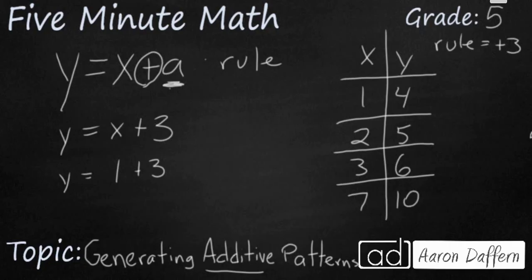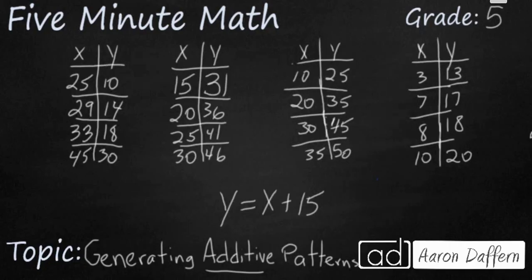Let's look at another example. Sometimes you'll get a problem like this. You are presented with four separate tables and you need to match it to a given rule. So in this case, our rule is y equals x plus 15. Let's take a look at these. The key here is to try to find the rule for each of these tables and then find which one is going to be adding 15.